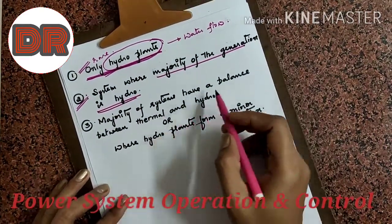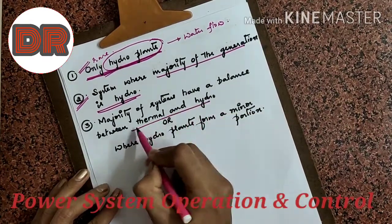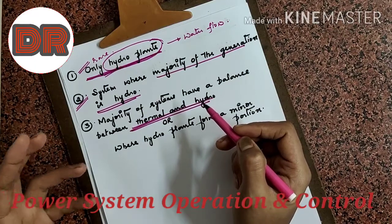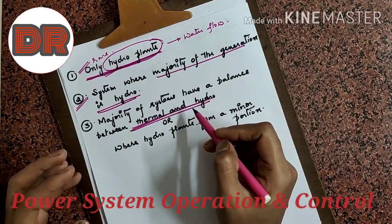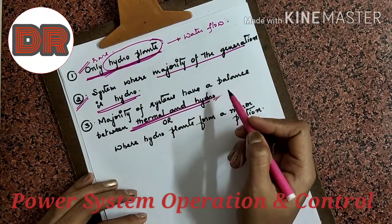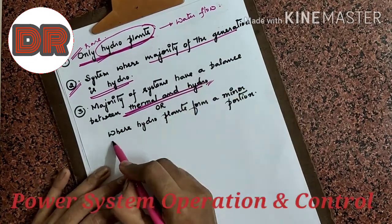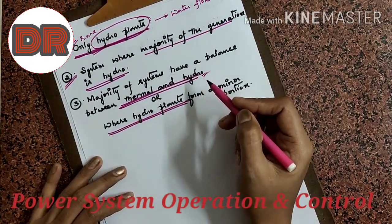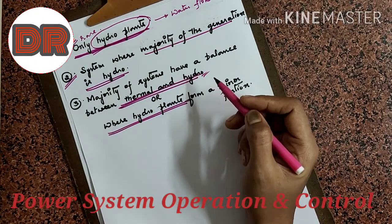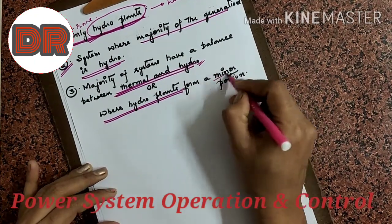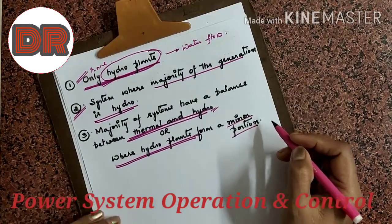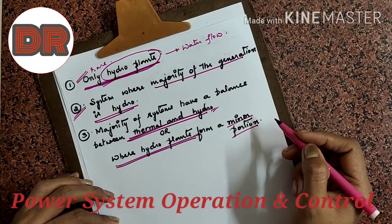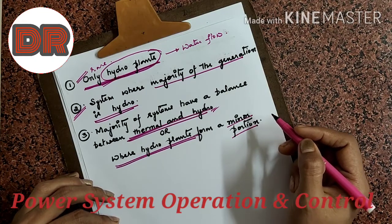The third category is a balance between thermal and hydro — a combination where we maintain the balance between thermal and hydro. You can also see it as a system that is predominantly thermal, or where the hydro plants form only a minor portion. So these are the three different categories of hydrothermal systems.